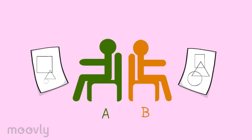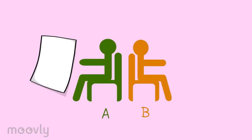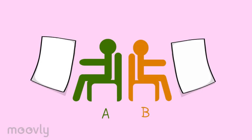The participants turn around and compare their drawings. After having exchanged feedback about the differences in the drawings and the way they communicated, they switch roles. Person A will now copy the drawing of person B without looking at the piece of paper, still only using spoken instructions.